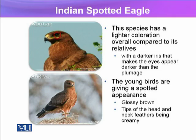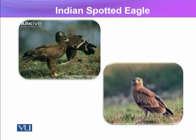This species has a lighter coloration overall compared to its relatives, with a darker iris that makes the eyes appear darker than the plumage. All the feathers covering the entire body are called plumage. Young birds have a spotted appearance, with glossy brown tips on the head and neck feathers being creamy. The spotted Indian eagle is comparatively lighter in shade.